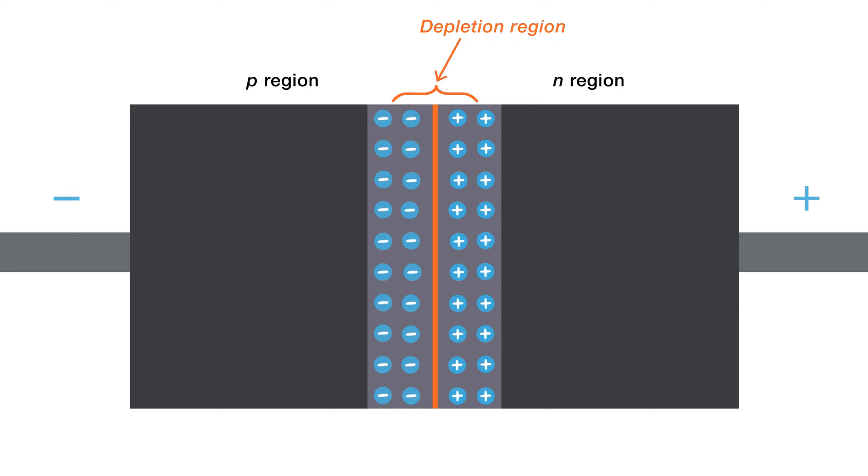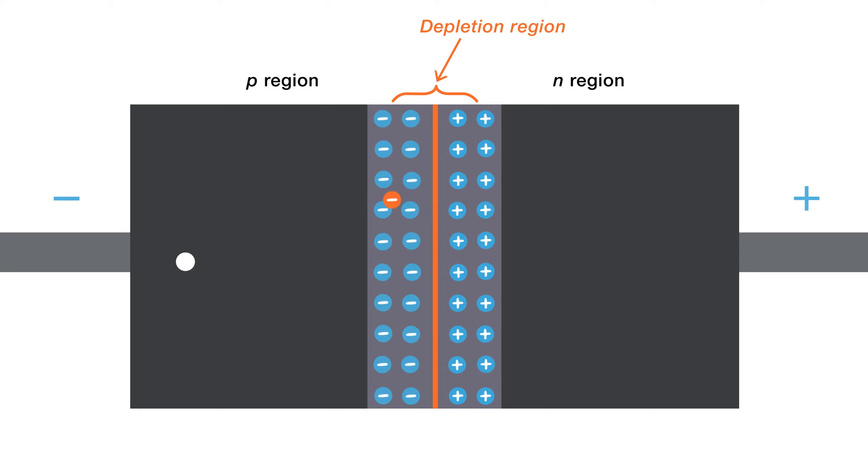The reverse current in a reverse bias condition is due to the minority carriers in the P and N regions. They are thermally generated electron hole pairs. The negative side of the external bias voltage pushes the minority carriers in the P region, which are free electrons, toward the PN junction. Since the conduction band in the P region is at a higher energy level than the conduction band in the N region, the minority electrons can just easily pass through the depletion region, since there's no additional energy required.